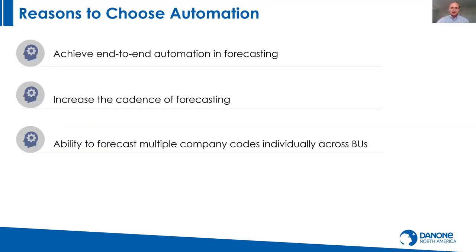When looking for a solution, we wanted something very automated — taking out the manual work so we could feel good about the output and shift the credit analyst from calculating forecasts to more value-added activities. We wanted end-to-end automation — ideally just pushing a button to get a forecast. We also wanted to improve cadence from twice a year to on-demand, and be able to pull forecasts across different company codes for each individual business unit we supported.